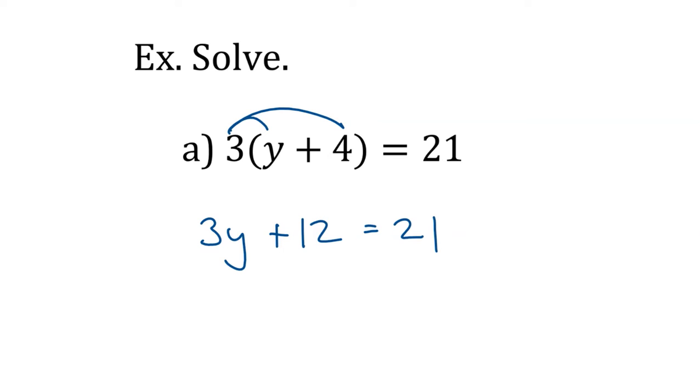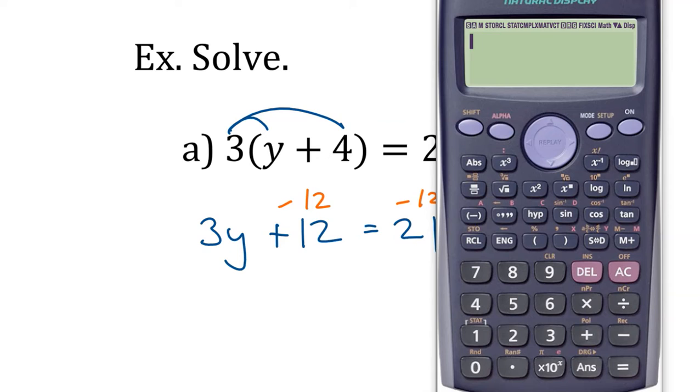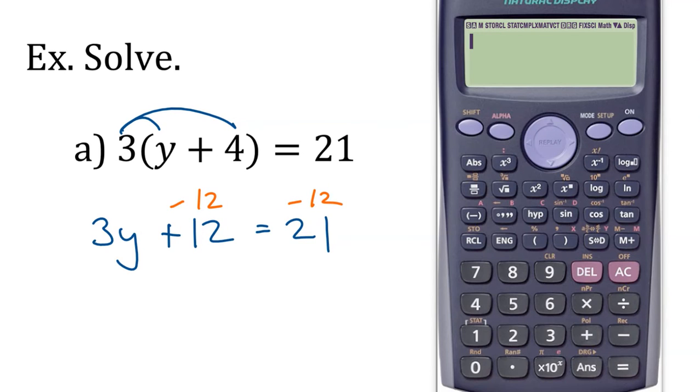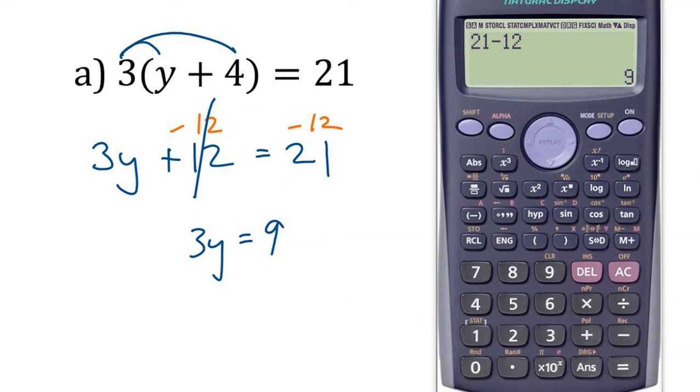What do we do next? Yeah, so I'm adding 12, so I subtract 12 and subtract 12. I can do 21 minus 12, that gives us 9. And then finally we get something Y equals a number, and then we do what as the last step? Divide by? Yeah, good.